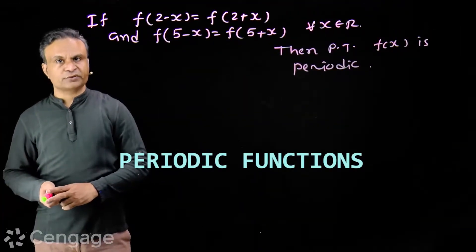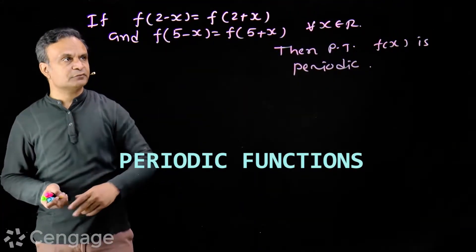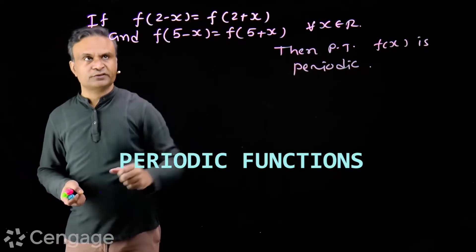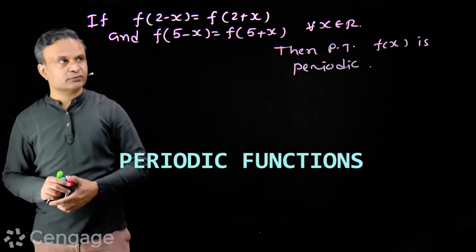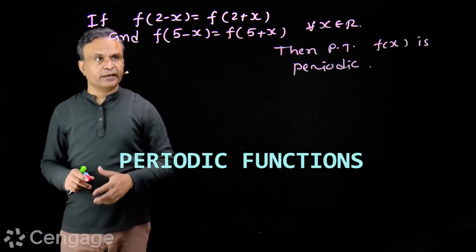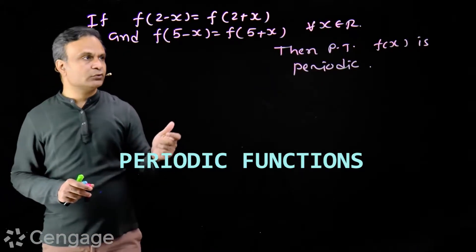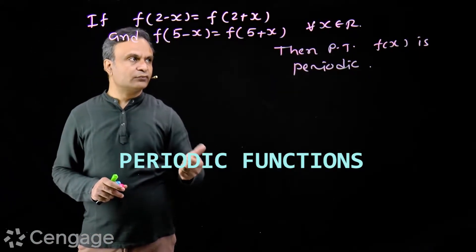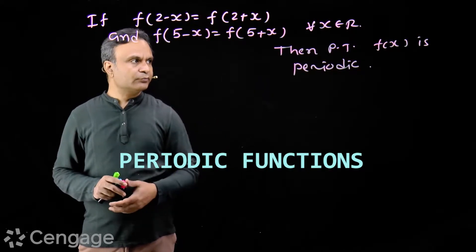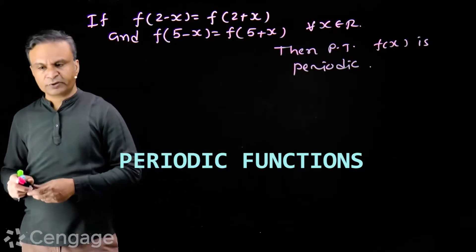Now we have a very unique question. If function f satisfies these two equations: f(2-x) = f(2+x) and f(5-x) = f(5+x) for all x belongs to R, then prove that function f(x) is periodic.